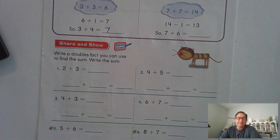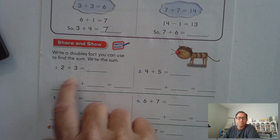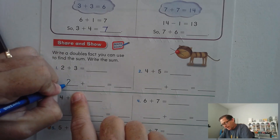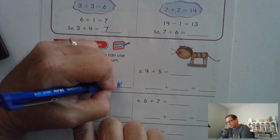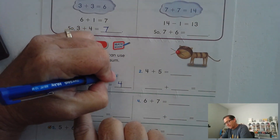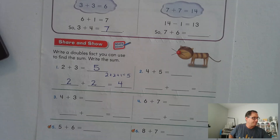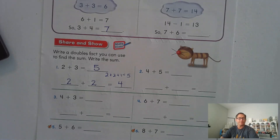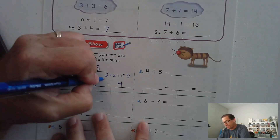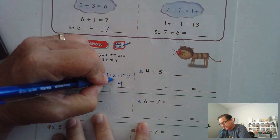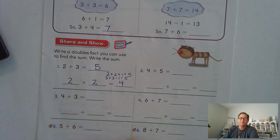Write a double fact you can use to find the sum, then write the sum. 2 plus 3: I could use 2 plus 2, which is 4, and add the 1 from the 3 — so 2 plus 3 is 5. Could I use 3 plus 3 minus 1? Yes — 3 plus 3 is 6, subtract 1, I still get 5.